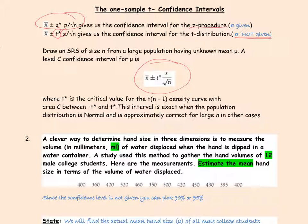So let's first read the question. It says that a clever way to determine hand size in three dimensions is to measure the volume of water displaced. Basically, you're trying to find the volume of the hand, which equals the volume of water displaced when the hand is dipped in a water container. We measure hand size in milliliters. The number of students in the sample is 12 male college students — that's our population.